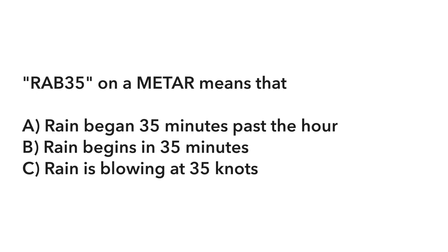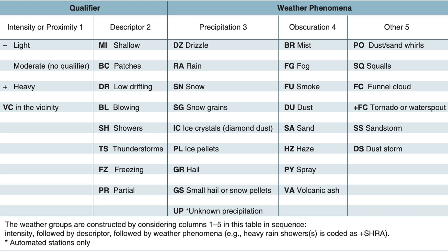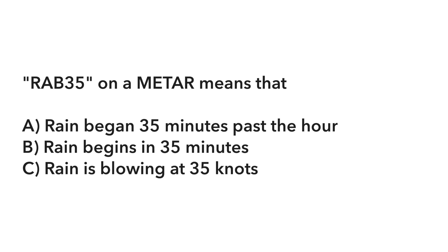You might also see a question about a METAR showing RAB35. RA stands for rain. Your answer choices might be: rain began at 35 minutes past the hour, rain will begin in 35 minutes, or some other random option. The question says this is on a METAR — METARs only show current conditions, they're not a crystal ball. So the 'will begin' option is immediately disqualified, and your answer is rain began at 35 minutes past the hour.